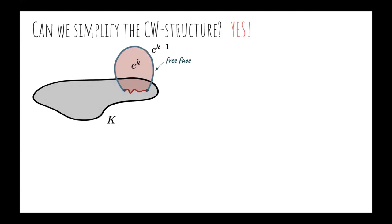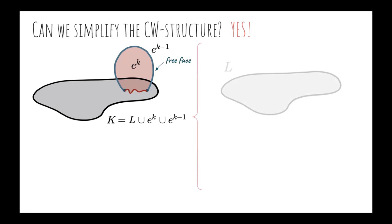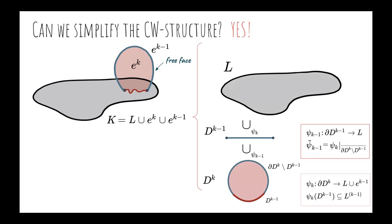But what does formally mean? Well, the complex should be decomposed as a complex L and two cells whose attaching maps satisfy some specific conditions, but can be summarized in the fact that some part of the attaching map of e^k induce the characteristic map of e^(k-1) and the rest is attached to L. In this situation, we can remove the pair of cells e^k and e^(k-1) performing an elementary collapse. And the inverse transformation is called elementary expansion.